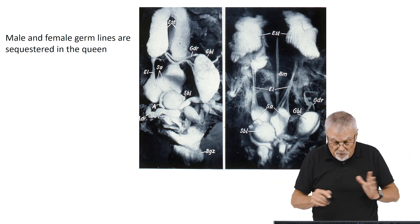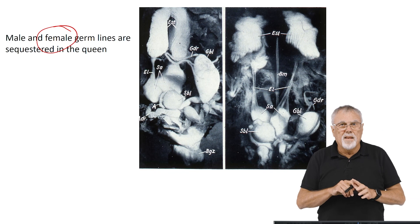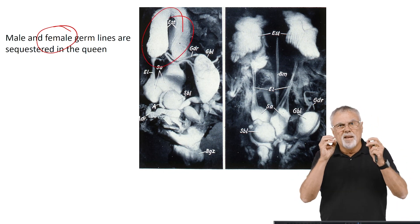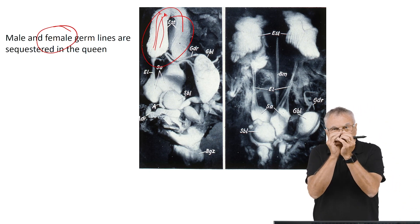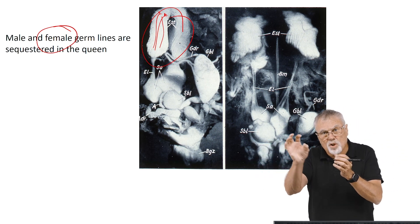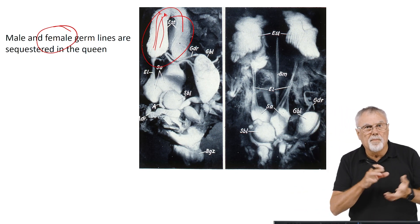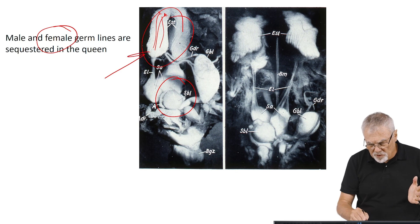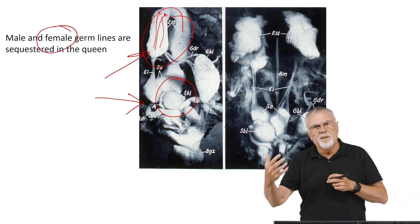In many social insects — the social Hymenoptera for sure — the queen becomes the store of the germ line for both male and female. Her paired oviducts are ovaries containing tubules that have at their tips primary oocytes: cells sequestered very early in embryonic development. These provide the eggs that are subsequently fertilized and become individuals. She also stores the sperm. So she sequesters both the female and the male germplasm and uses it to produce workers, drones, and queens.